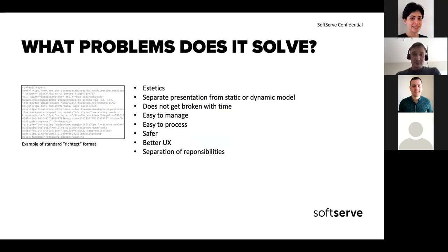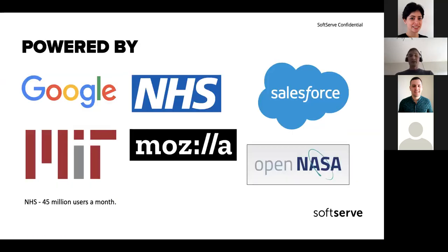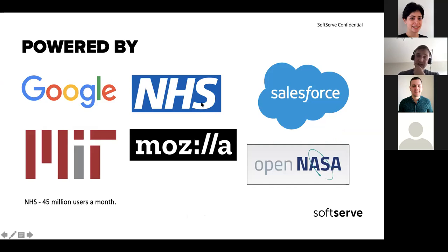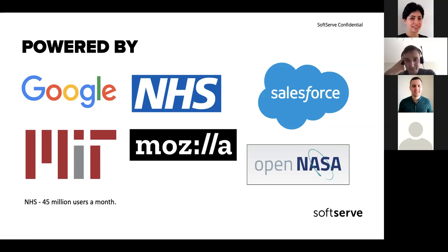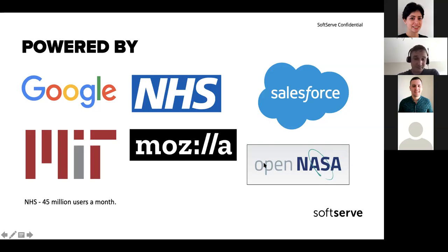I have to go back because I missed one slide — who is using Wagtail. It's used by Google, by the NHS in the UK, which is a very popular site storing many pages about health and their health system. They handle 45 million unique users per month and still doing well. Used by Salesforce, the University — Mozilla documentation also uses it — and NASA.